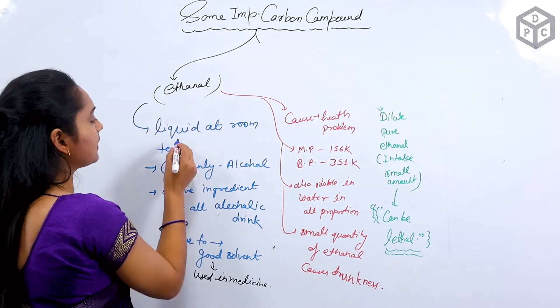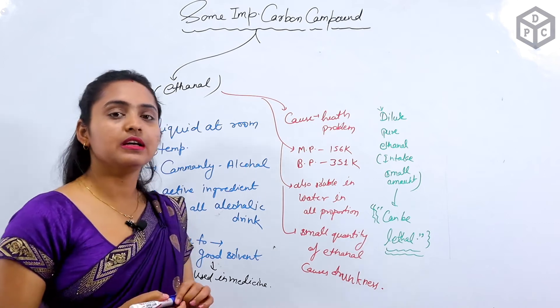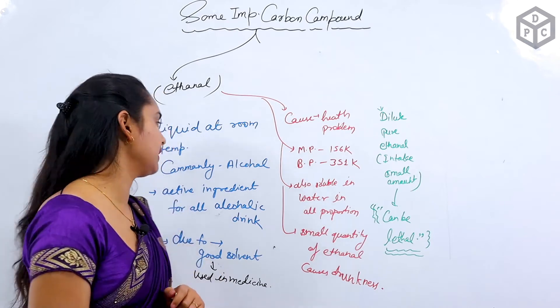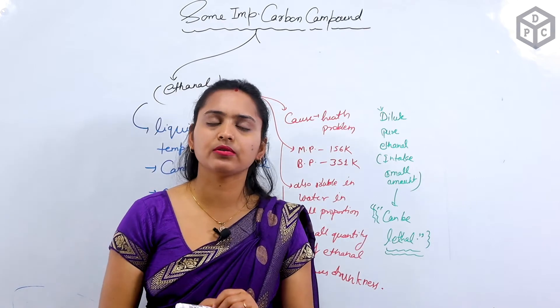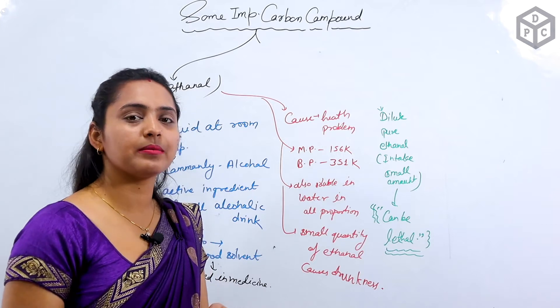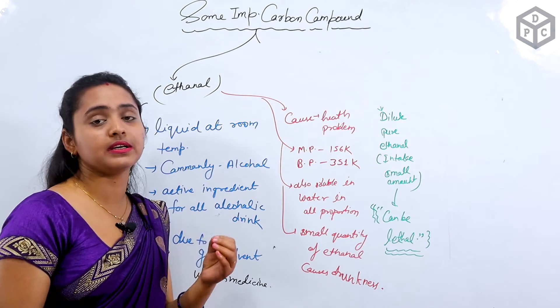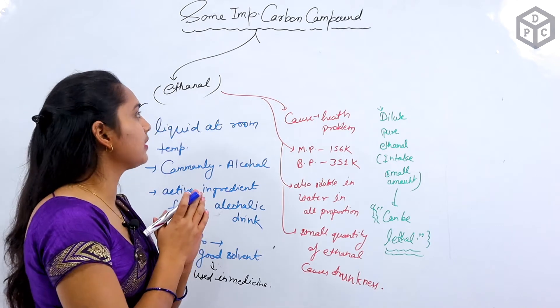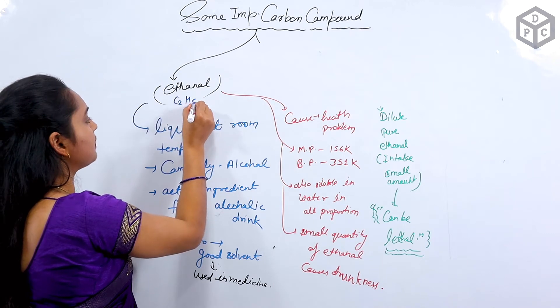What happens in ethanol? It is liquid at room temperature. It is either in the solid form or in the gas form, but ethanol is liquid. Second, we call it alcohol too. You will hear about alcohol. 90% or 100% of people call it alcohol. So alcohol is called ethanol. It is commonly called alcohol. You can say that the chemical name of alcohol is ethanol. It is called C2H5OH.